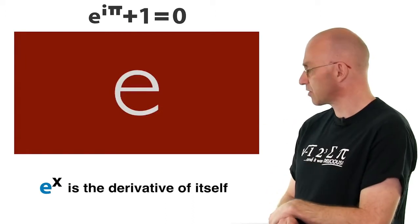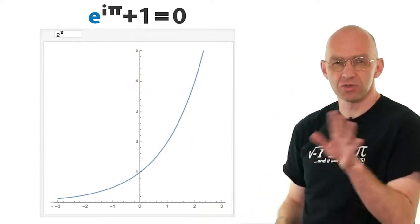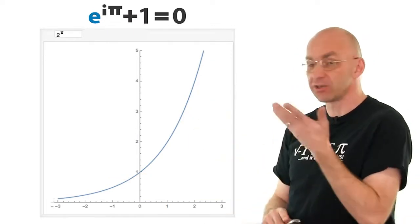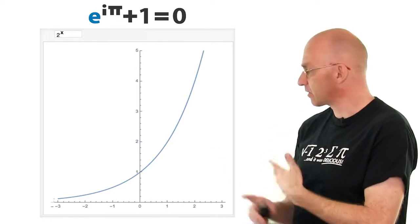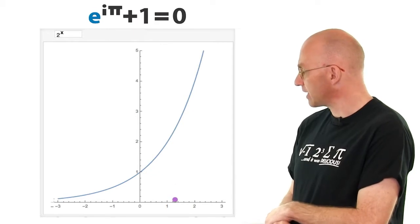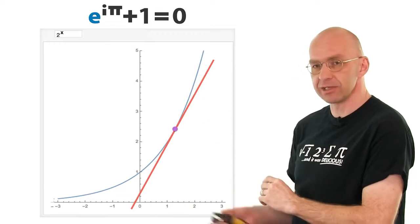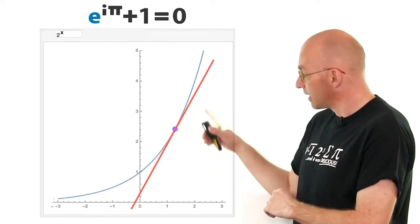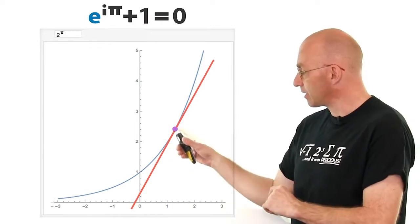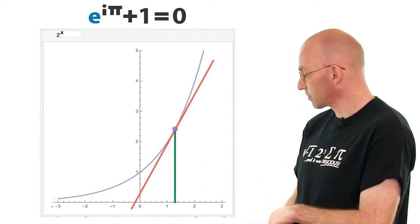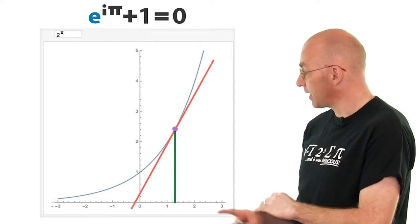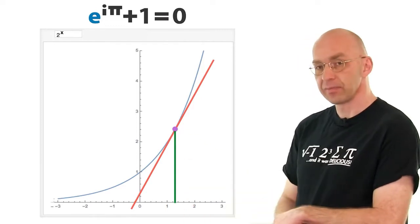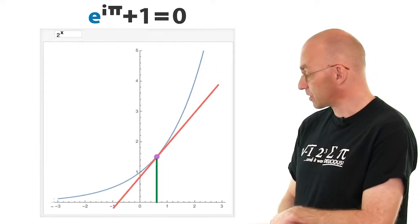Let's look at another exponential function we're more familiar with, like 2 to the power of x. If that were e to the x, it would have this property. We can actually do this graphically. We look at any point and look at the tangent line to that point, and we look at the slope of this line. The property that the derivative business is talking about is that the slope of the exponential function at any point is equal to the value of the function at that point.